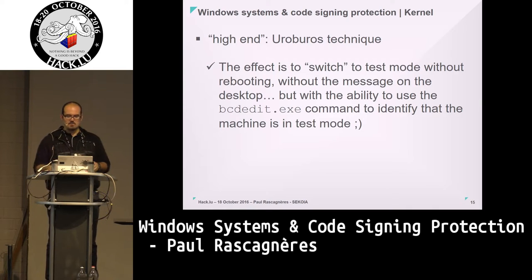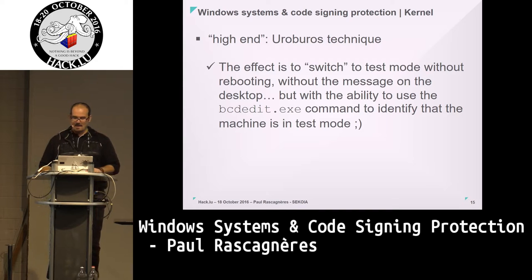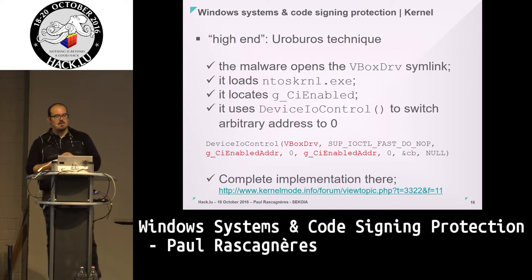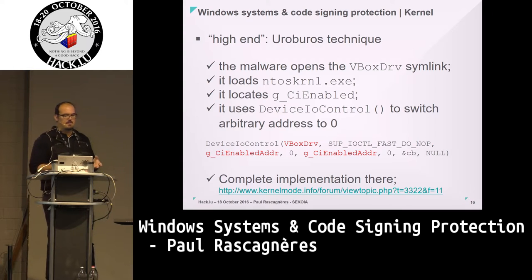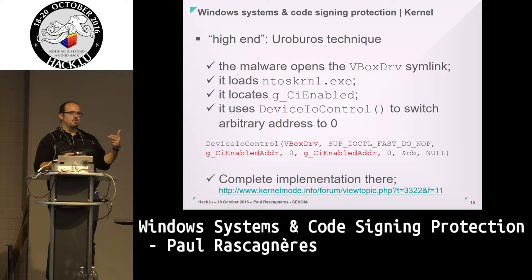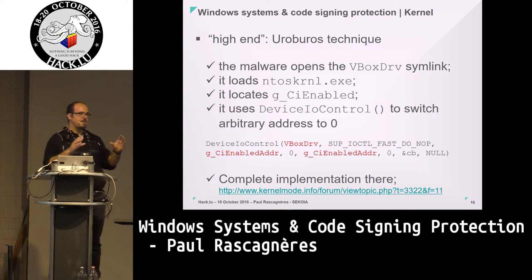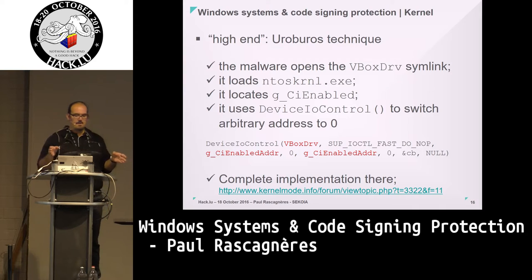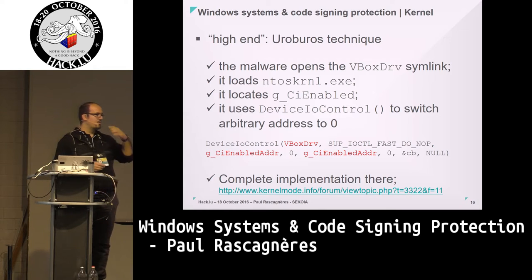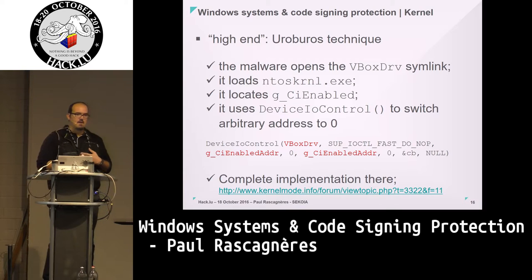In more detail: the VirtualBox driver creates a symbolic link called VBoxDrv, and the attacker uses this symbolic link to overwrite the global flag address using a DeviceIoControl call. You have the global flag address and it switches to zero. There's a complete implementation on KernelBond — you can simply copy-paste it, and it works to disable Windows signature checking on 64-bit versions.